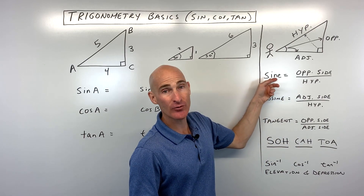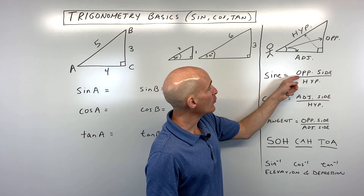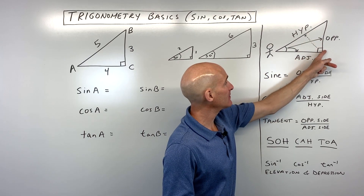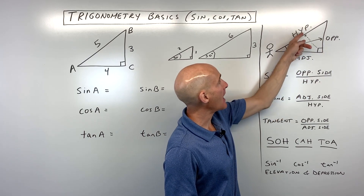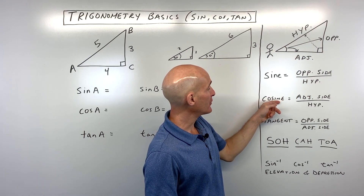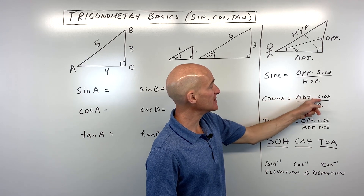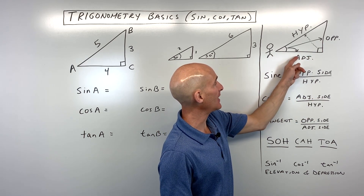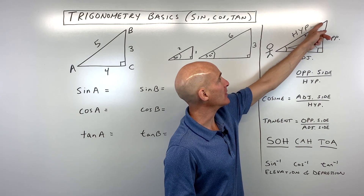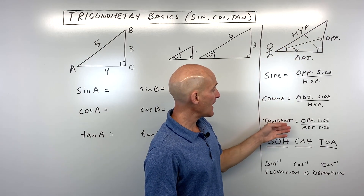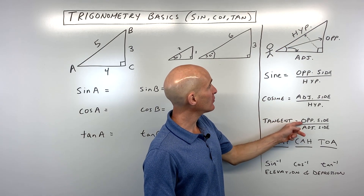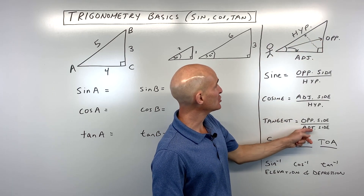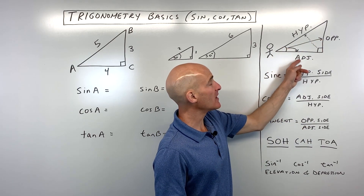So when we talk about the sine ratio, we're talking about the ratio of the opposite side length divided by the hypotenuse. If we're talking about the cosine, we're talking about the ratio of the adjacent side — that's the side that's next to the angle — divided by the hypotenuse, the one that's across from the right angle. And then the tangent ratio is the ratio of the opposite side, the one across from the angle, divided by the adjacent side, the one next to the angle.